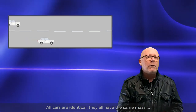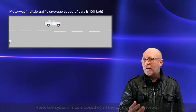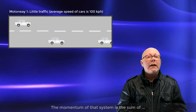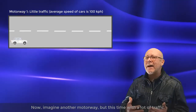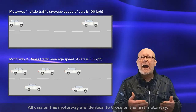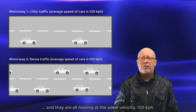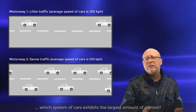Let me illustrate. Imagine a motorway with traffic. All cars are identical — they all have the same mass and are going at 100 kph. The system is made of all the cars on the motorway, and the momentum of that system is the sum of the momenta of the individual cars. Now imagine another motorway, but this time with a lot of traffic. All cars on this motorway are identical to those on the first motorway and they are all going at the same velocity, 100 kph. When looking at the two motorways, which system of cars exhibits the largest amount of motion?